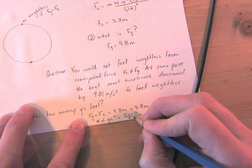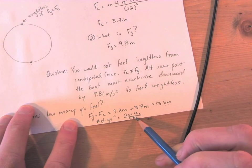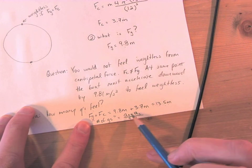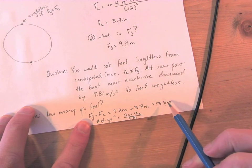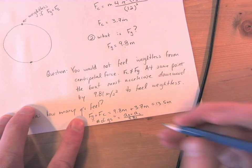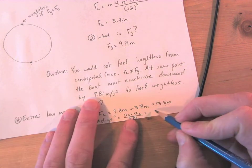Again, we're not taking force of gravity and force of centripetal because we don't really care about the mass when it comes to g's. So overall here it's 13 and a half divide by 9.81.